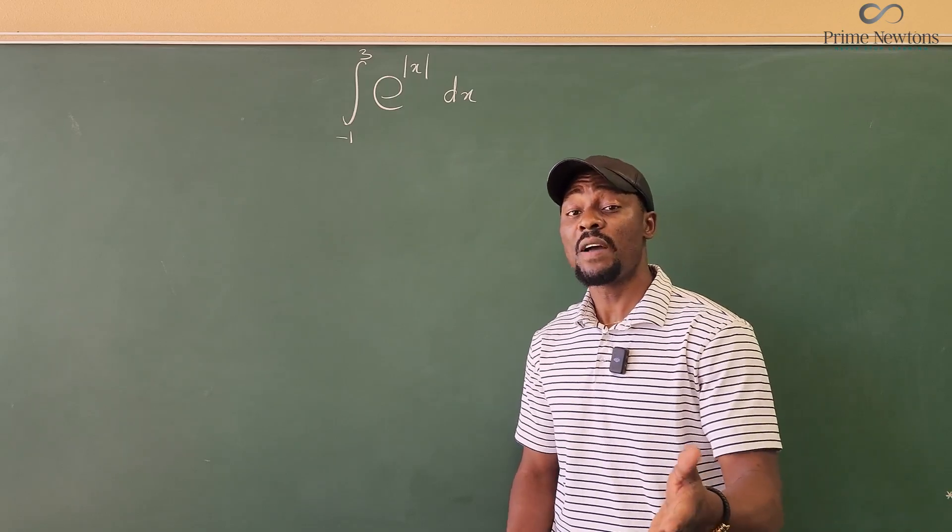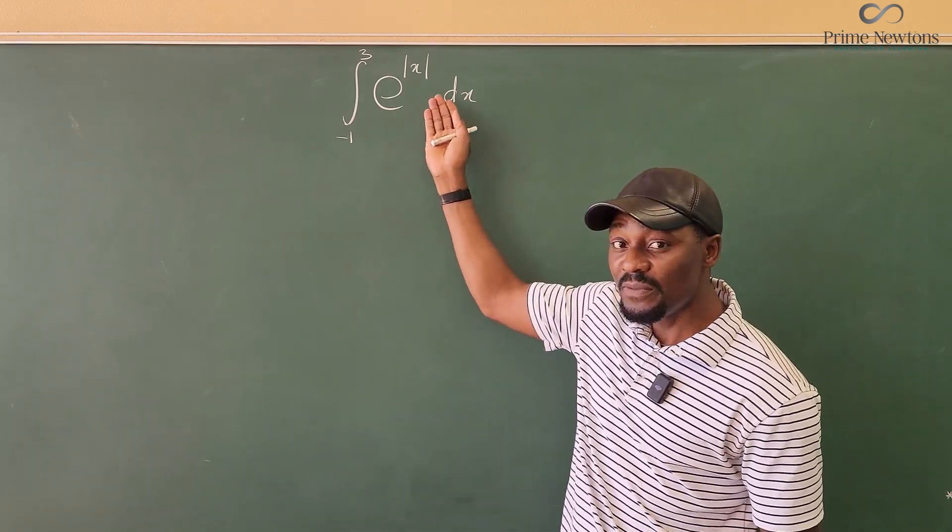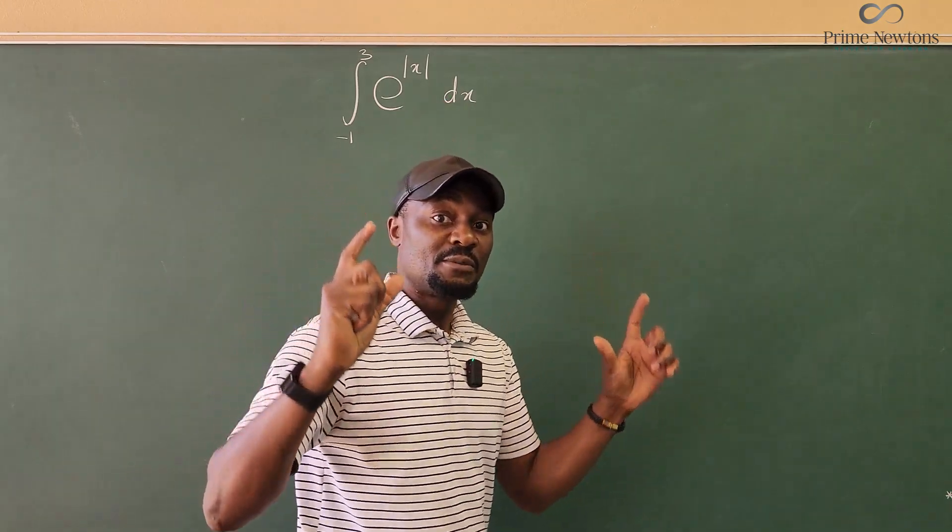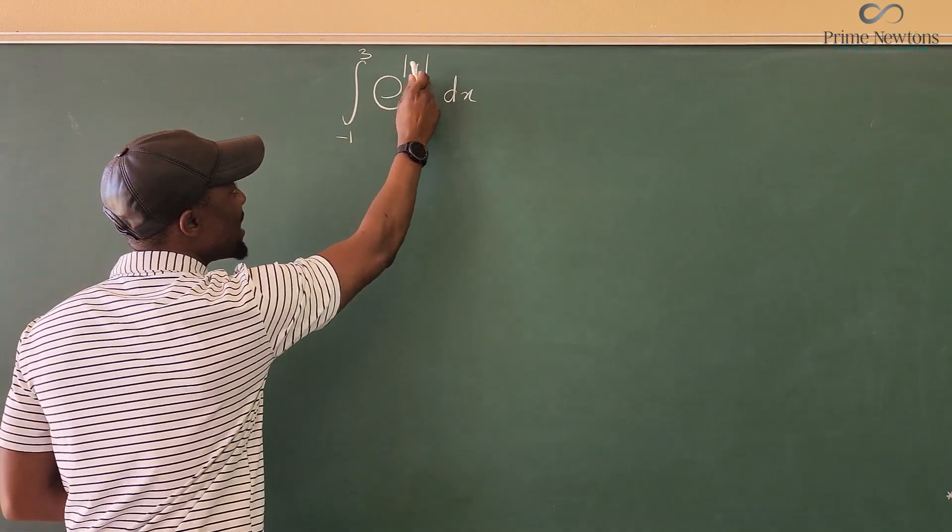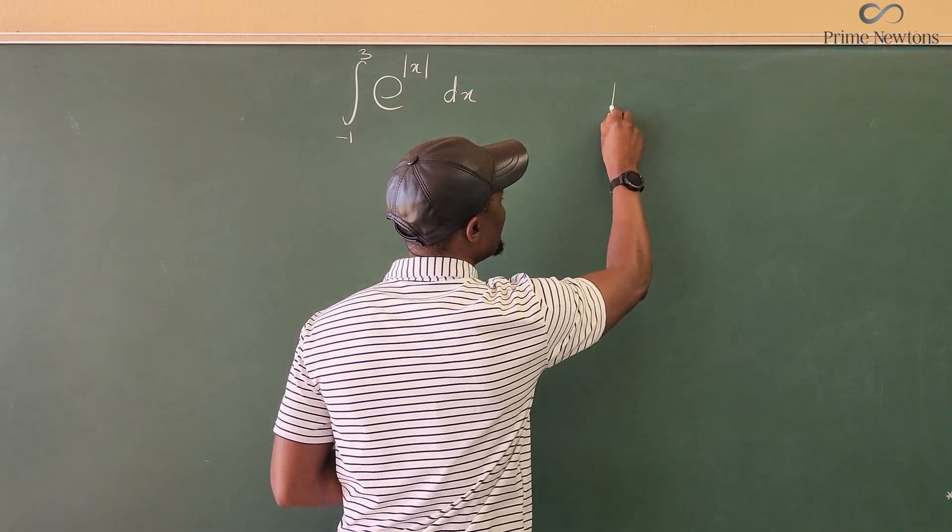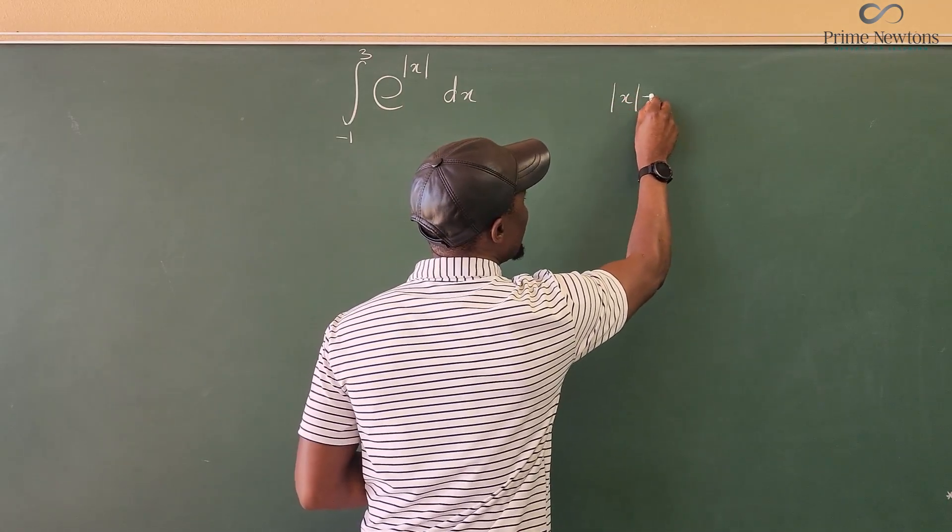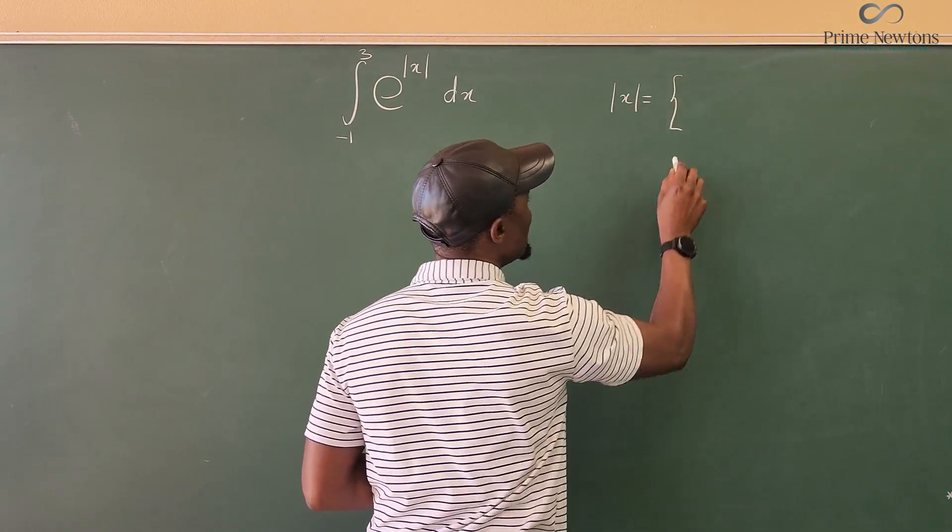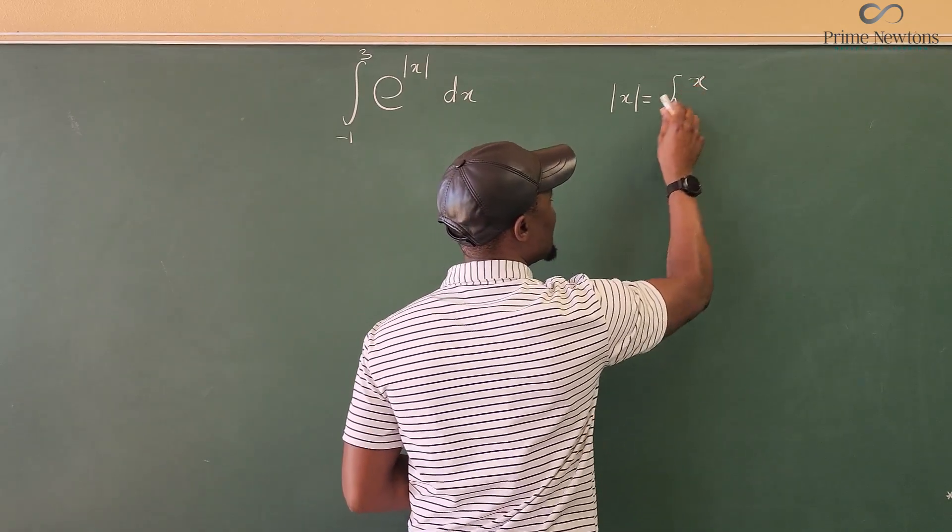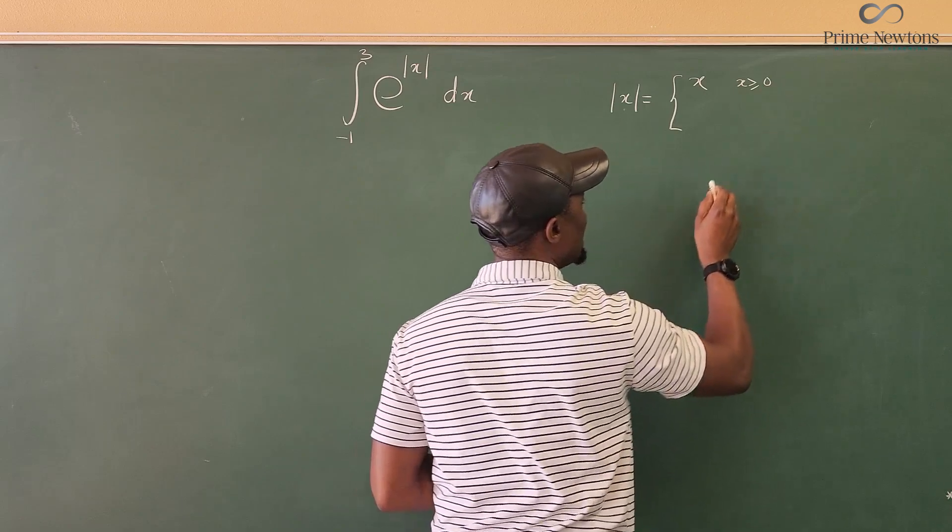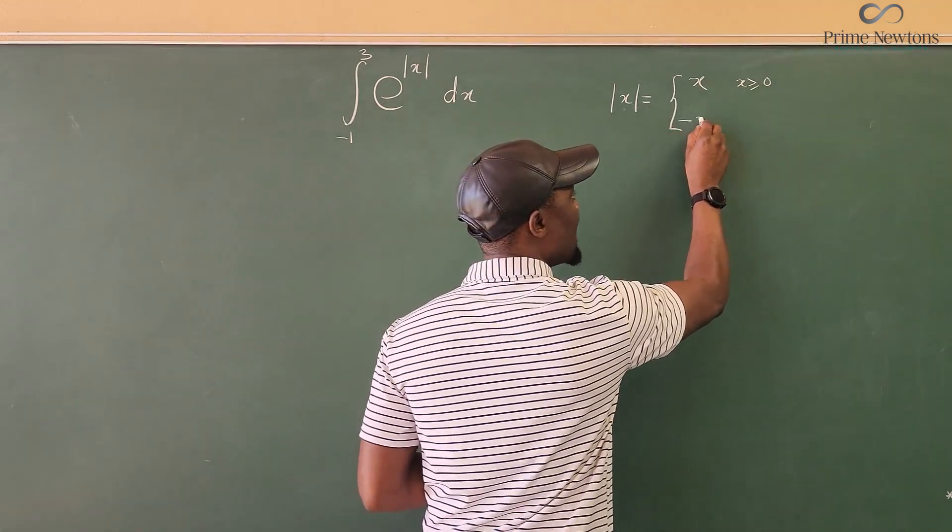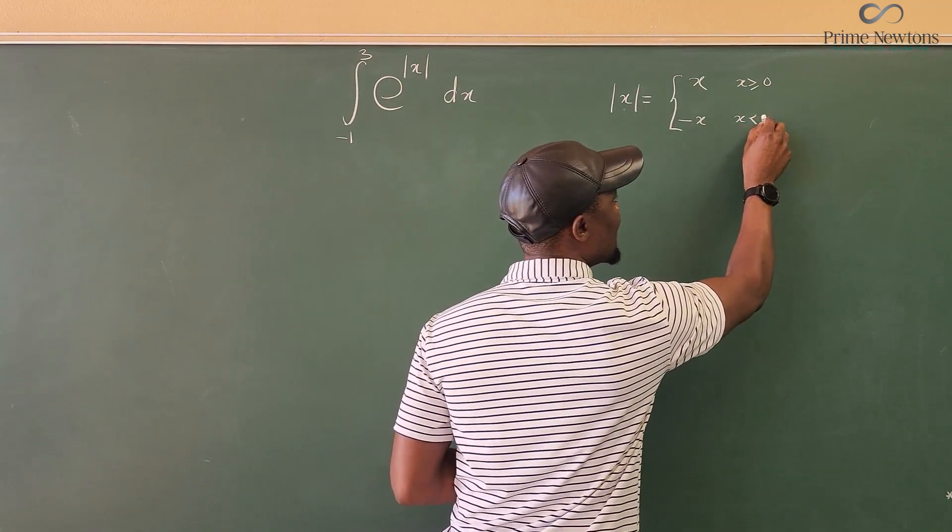So this is what you have to do every time there's an absolute value expression in an integral. You have to know that this guy we have here, the absolute value of X, could mean either of these two things. It could mean X itself if X is greater than or equal to zero, or it could mean negative X if X is less than zero.